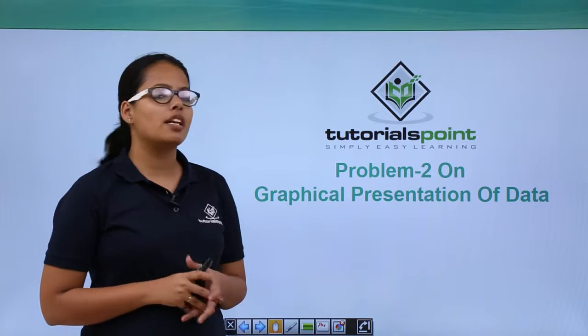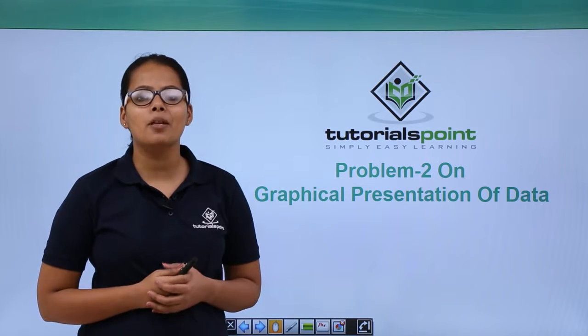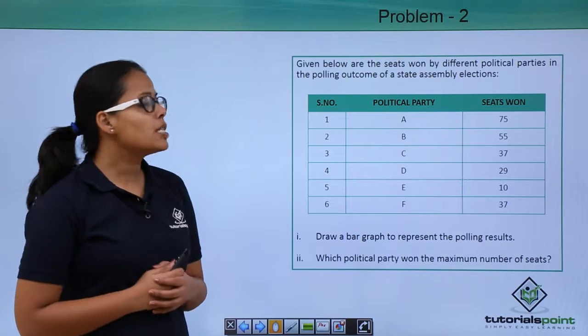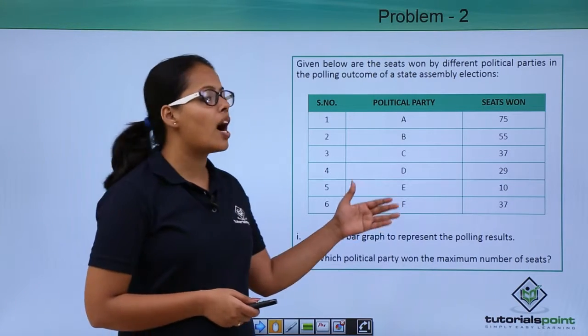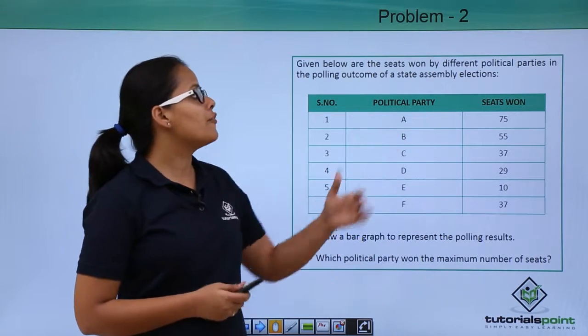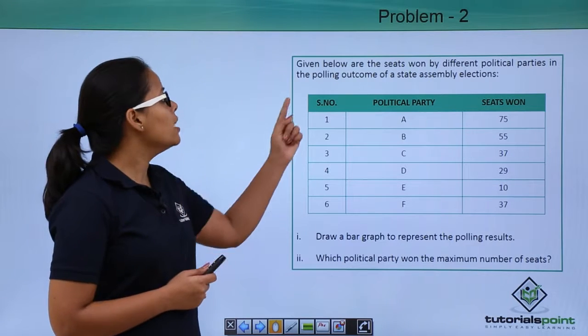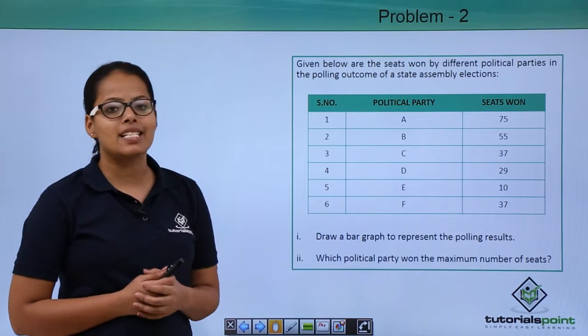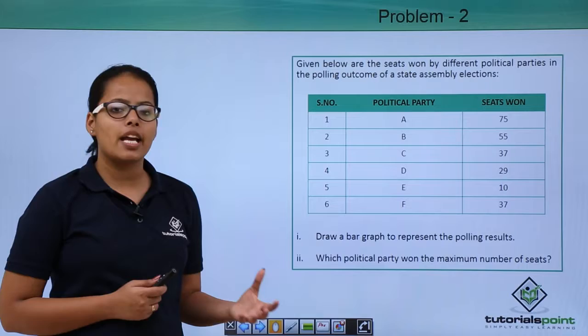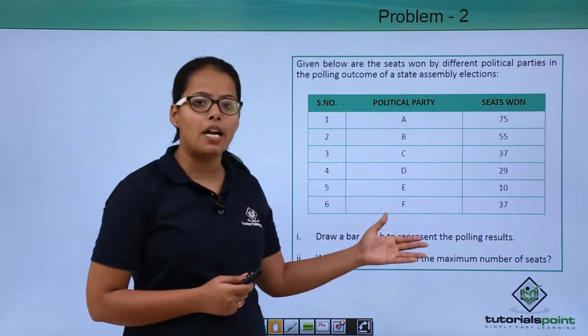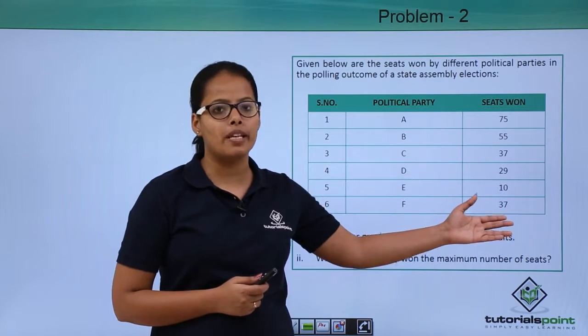Hello guys, let's discuss another problem based on graphical presentation of data. This problem says that given below are the seats won by different political parties in the polling outcome of a state assembly election. There is an election where these are the political parties and these are the seats won by them.